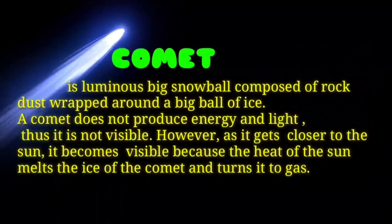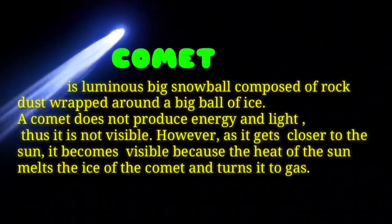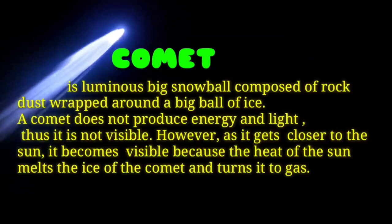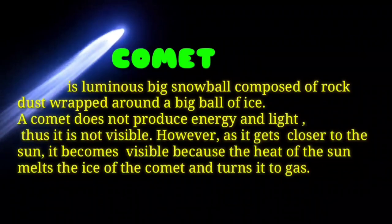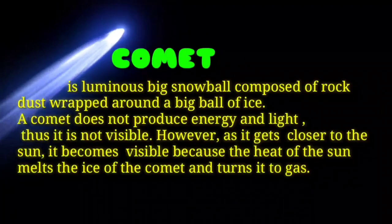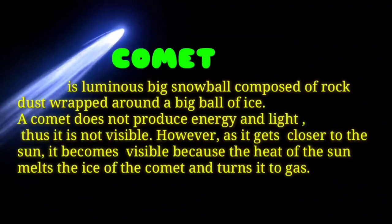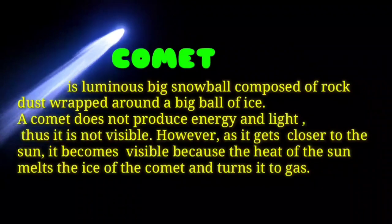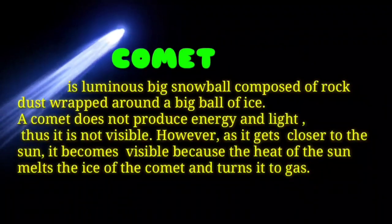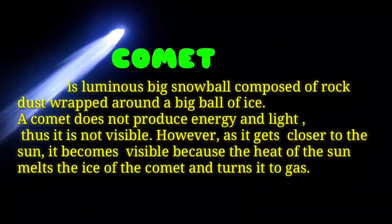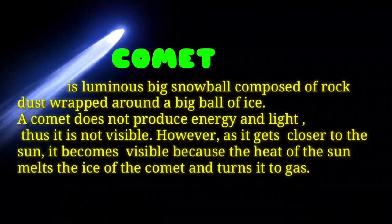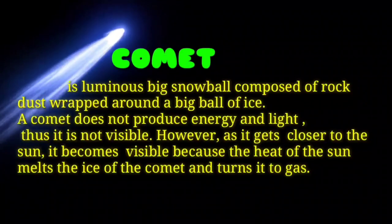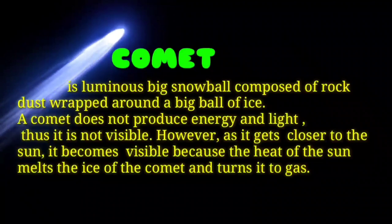A comet is a luminous big snowball composed of rock dust wrapped around a big ball of ice. A comet does not produce energy and light; thus, it is not visible. However, as it gets closer to the Sun, it becomes visible because the heat of the Sun melts the ice of the comet and turns it to dust.